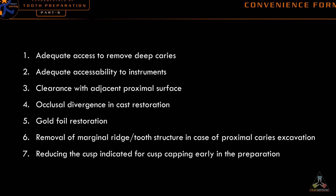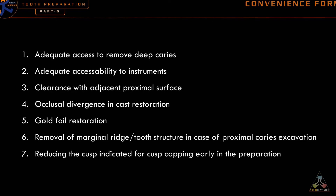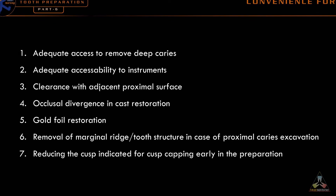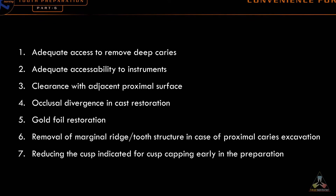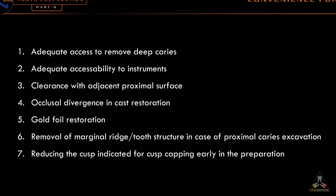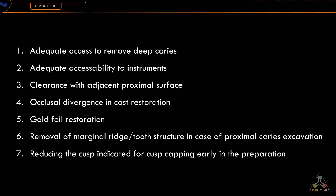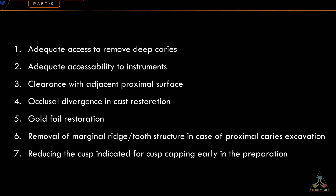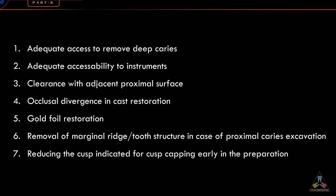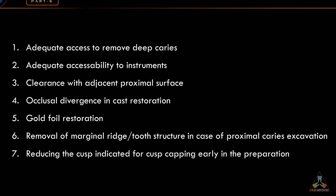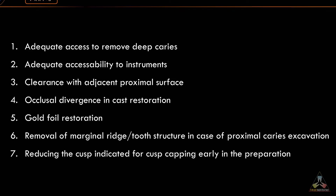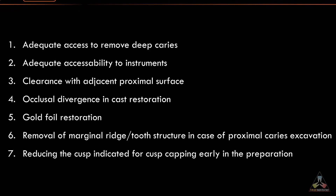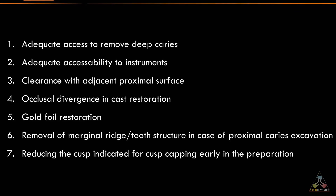These include: adequate access to remove deep caries; adequate accessibility for instruments used in tooth preparation and restorative procedures; clearance with the adjacent proximal surface; occlusal divergence in cast metal restorations; convenience form provided for gold foil restoration; removal of marginal ridge or tooth structure in case of proximal caries excavation; and finally, reducing the cusp indicated for cusp capping early in the preparation. Let's see all these steps one by one with some examples.